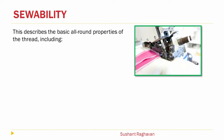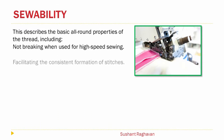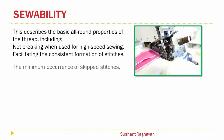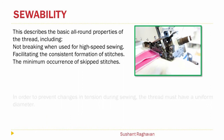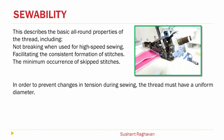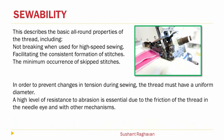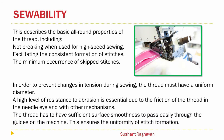Sewability describes the basic all-round properties of the thread, including not breaking when used for high-speed sewing, facilitating the consistent formation of stitches, and the minimum occurrence of skipped stitches. In order to prevent changes in tension during sewing, the thread must have a uniform diameter. A high level of resistance to abrasion is essential due to the friction of the thread in the needle eye and with other mechanisms. The thread also has to have sufficient surface smoothness to pass easily through the guides of the machine, ensuring uniformity of stitch formation.